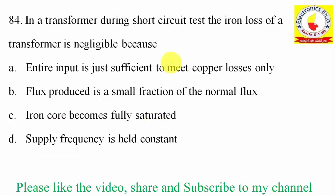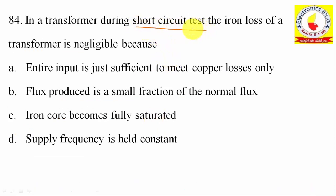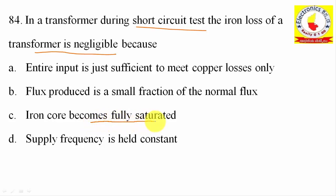84th question: In a transformer during a short circuit test, we have two forms of tests: short circuit test and open circuit test. During the short circuit test, we measure copper losses. Iron losses are negligible because the entire input is just sufficient to meet copper losses only, and flux produced is a small fraction of the normal flux. Option D.